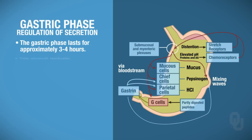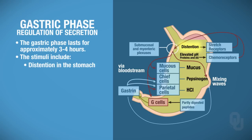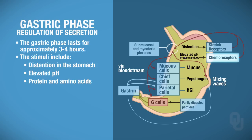The stimuli for the gastric phase include distention of the stomach. This phase originates because of the stimulus in the stomach. The stimuli are: distention of the stomach, elevated pH in the stomach — more basic, if you will. You're also going to have proteins in the stomach that will stimulate chemoreceptors, and amino acids because some proteins will be broken down into amino acids.